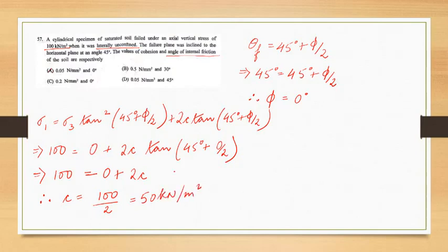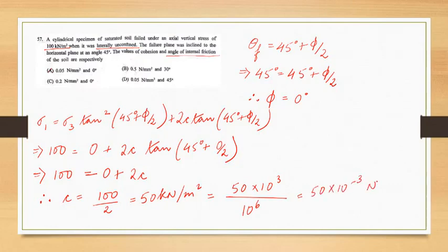Therefore C = 100/2 = 50 kN/m². Since the options are given in Newton per mm², we convert: 50 kN/m² = 50 × 10⁻³ N/mm² = 0.05 N/mm². Hence the answer to this question is option A — cohesion = 0.05 N/mm² and angle of internal friction = 0 degrees.